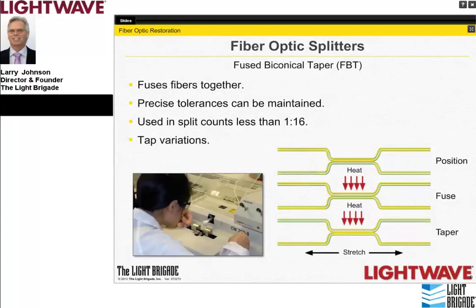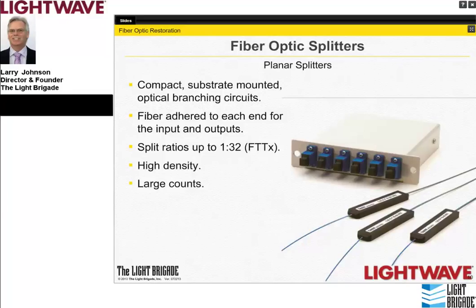The other type of splitter used more frequently in larger counts, such as FTTX with 1×32 splitters at fiber distribution hubs, is the planar splitter. These are more compact, rectangular-shaped devices. They're typically packaged in modular cassette configurations—such as a six-pack, 1×8, 1×16, or 1×32—and can easily be integrated into outside plant cable management products or head ends and central offices. Planar splitters can also be combined with FBT splitters; for example, a GPON FTTX installation might use a FBT 1×2 feeding into a series of 1×32 planar splitters.